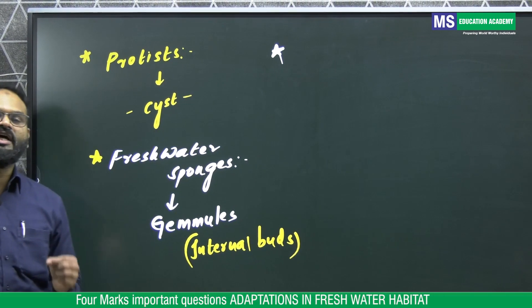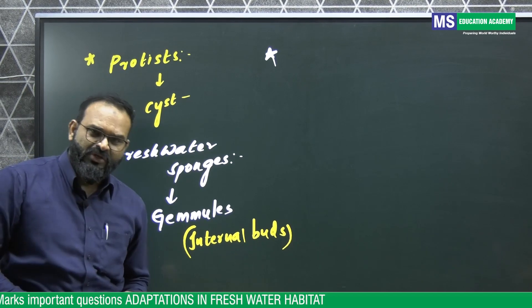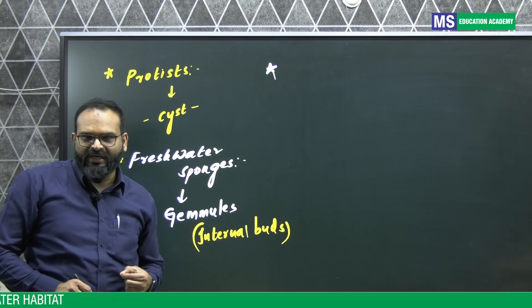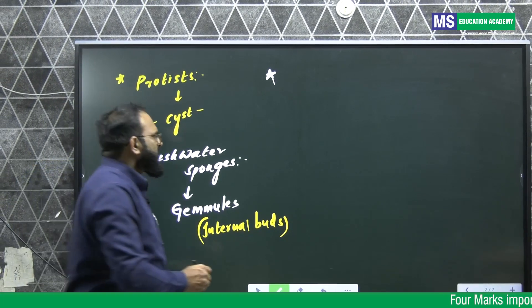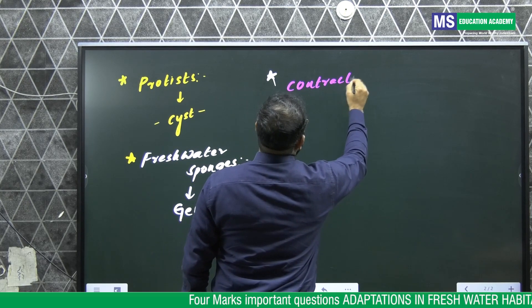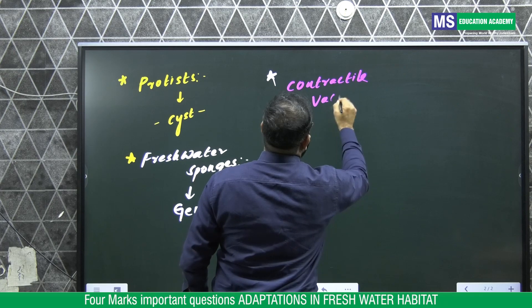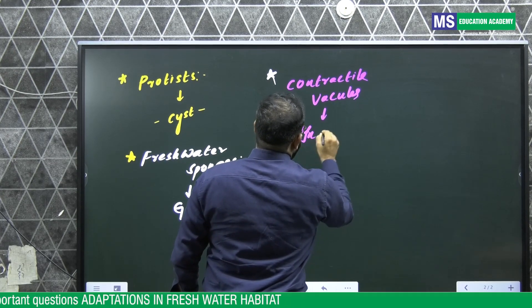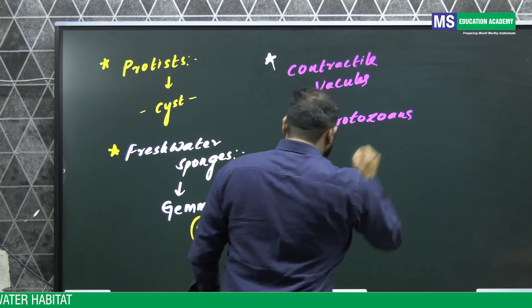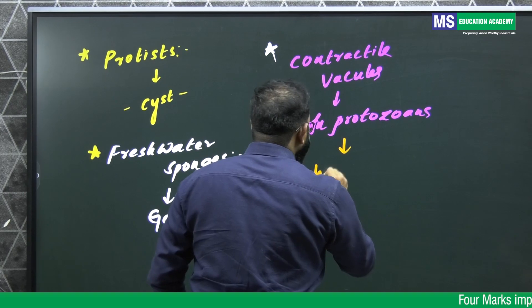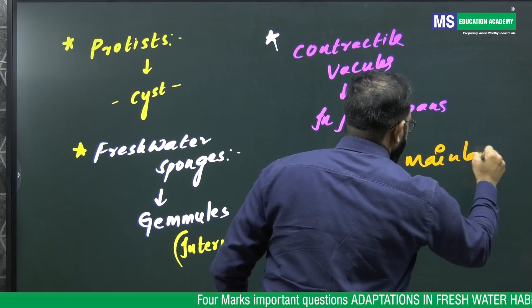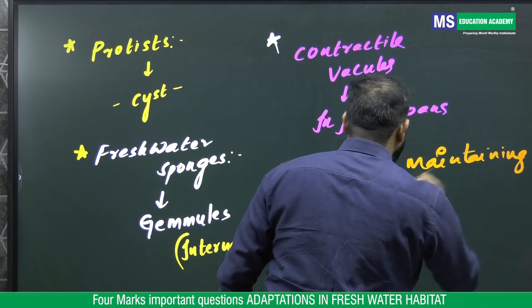In protozoans, which are unicellular organisms, to maintain osmoregulation they have special cell organelles called contractile vacuoles. Contractile vacuoles in protozoans help in maintaining osmoregulation.